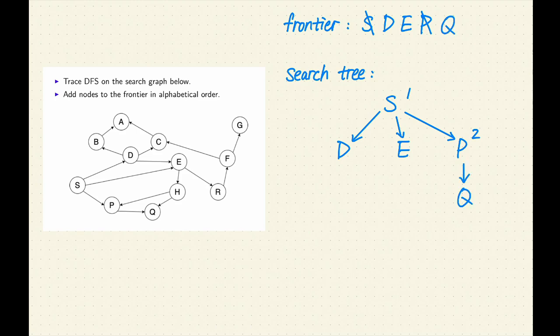Step 3. The most recent node added to the frontier was Q. Q is the third node expanded. Remove Q from the frontier. Q is not a goal. Let's expand Q. Q has no successor. There's nothing to add to the frontier and to the search tree.